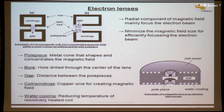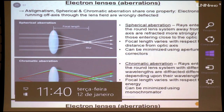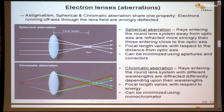Just as with glass lenses, there are aberrations in electromagnetic lenses too. There are three important aberrations: astigmatism, spherical aberration, and chromatic aberration. All three share one common property — electrons running off-axis through the lens are wrongly deflected. For spherical aberration, electrons farther from the optic axis are focused at a different point than electrons near the axis. Chromatic aberration is mainly related to the energy of the electron beam. Spherical aberration can be minimized using apertures to a certain extent, but it cannot be eliminated; using a corrector, it can be greatly reduced. Chromatic aberration can be minimized using a monochromator.